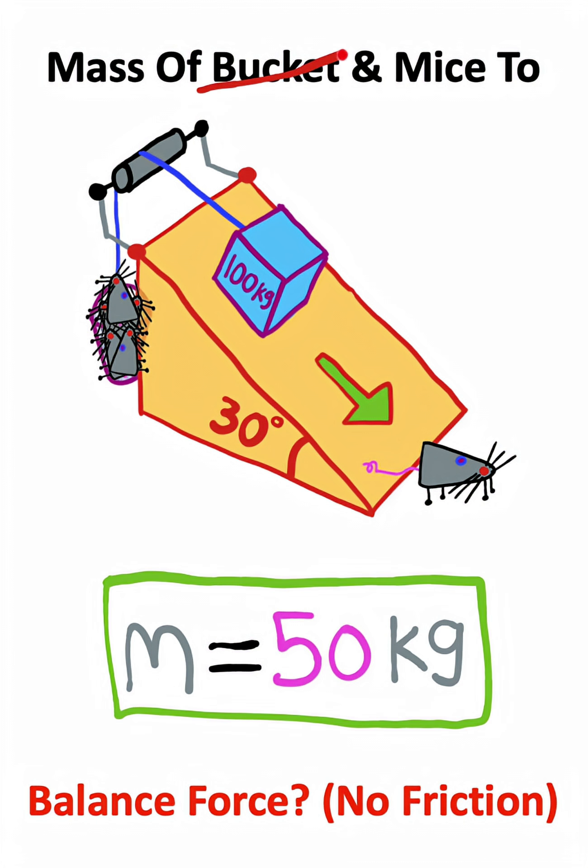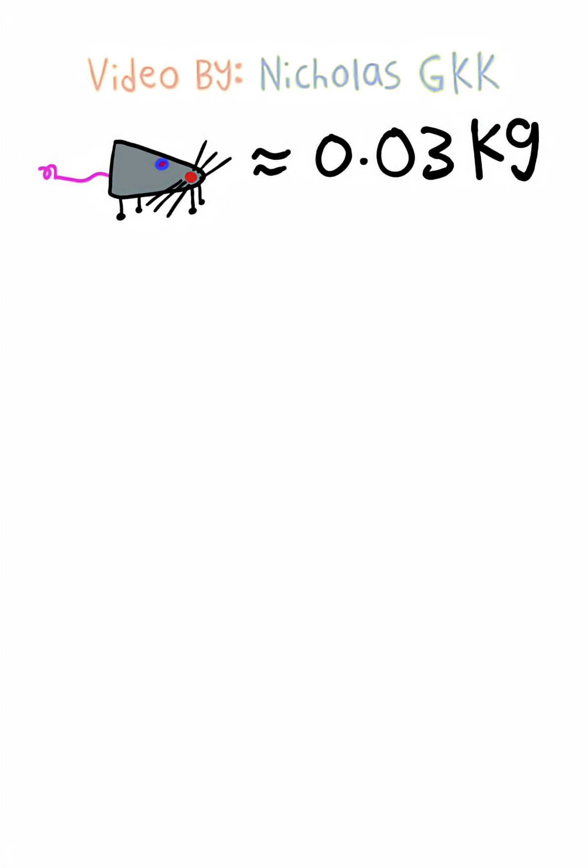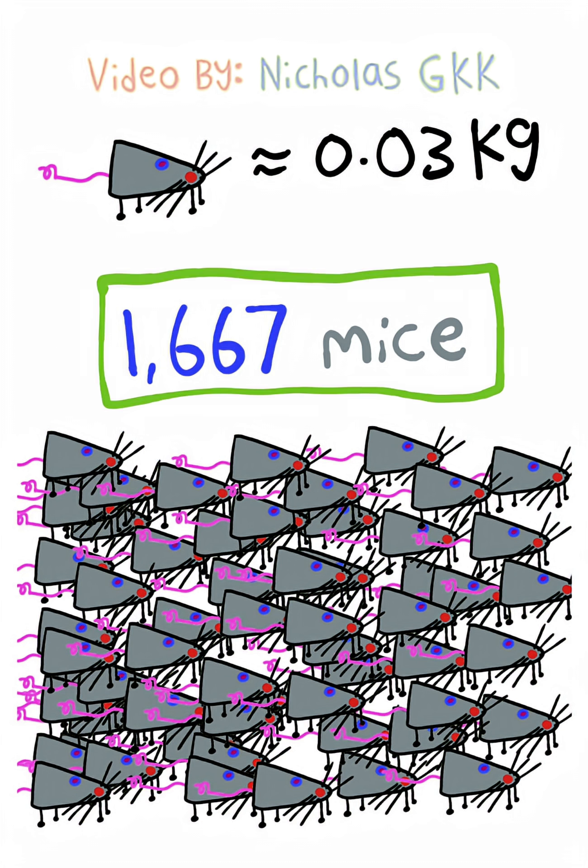Now if we ignore the mass of the bucket, one mouse is about 0.03 kilograms. So this means we need over 1600 mice to disable the trap.